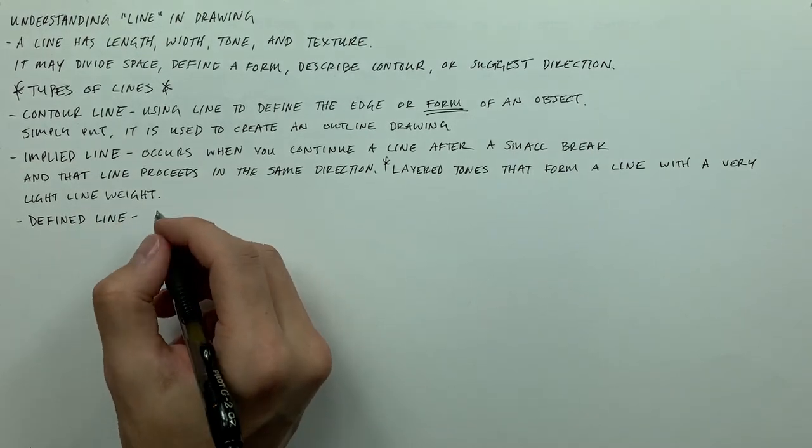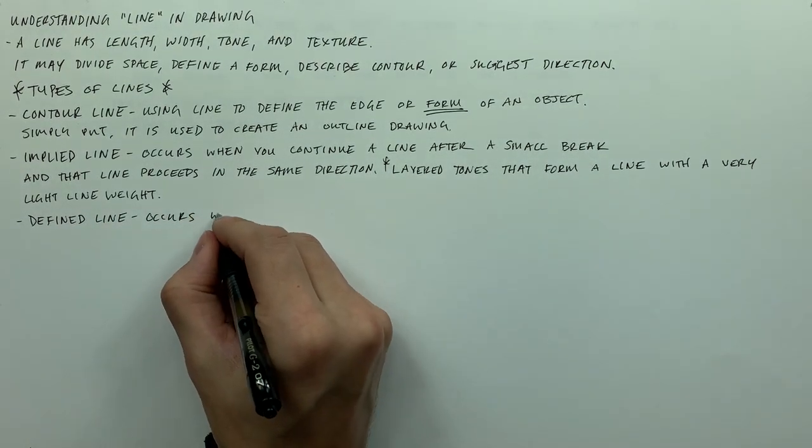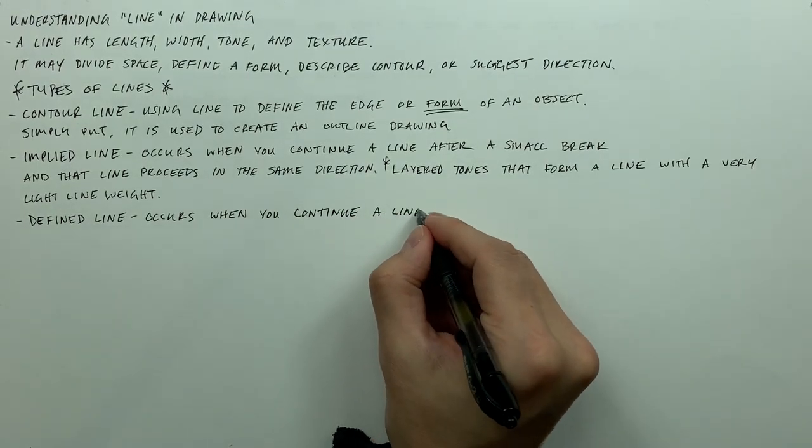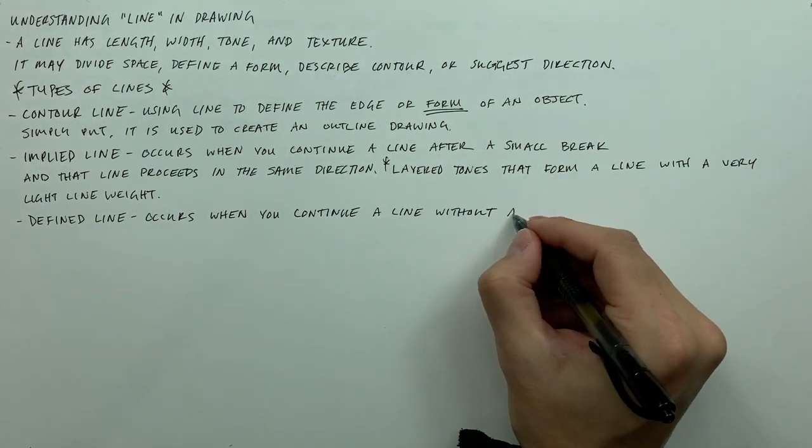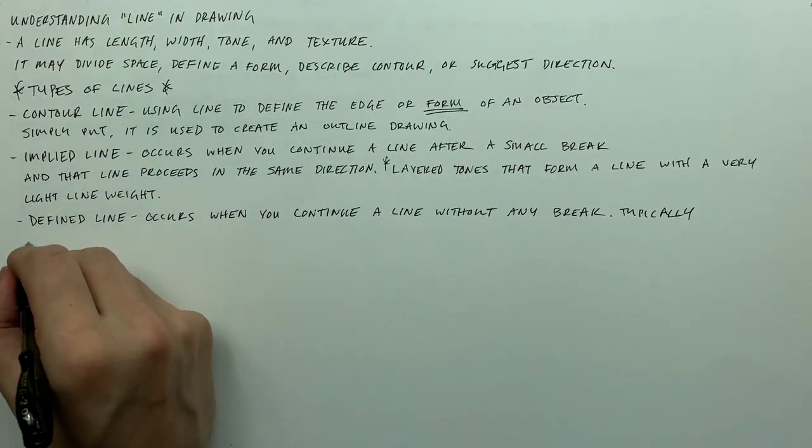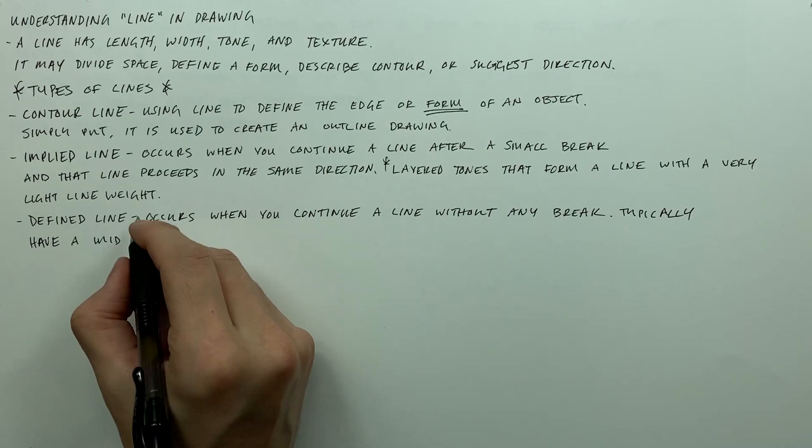Now the opposite of an implied line is of course a defined line, and defined lines occur when you continue a line without any break at all. They typically have a mid to heavy line weight.